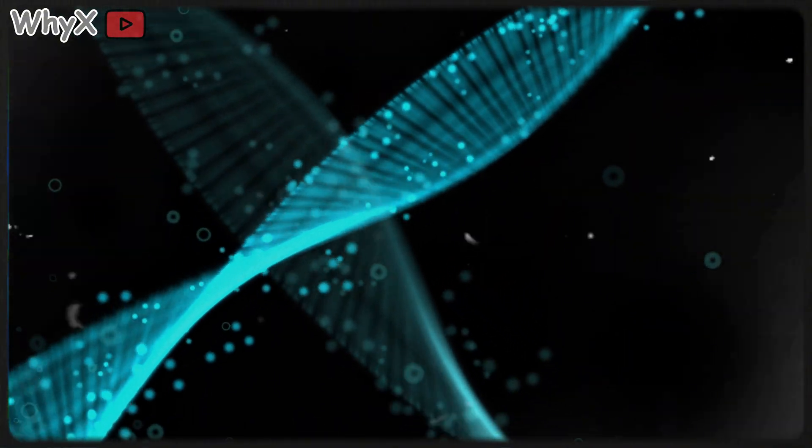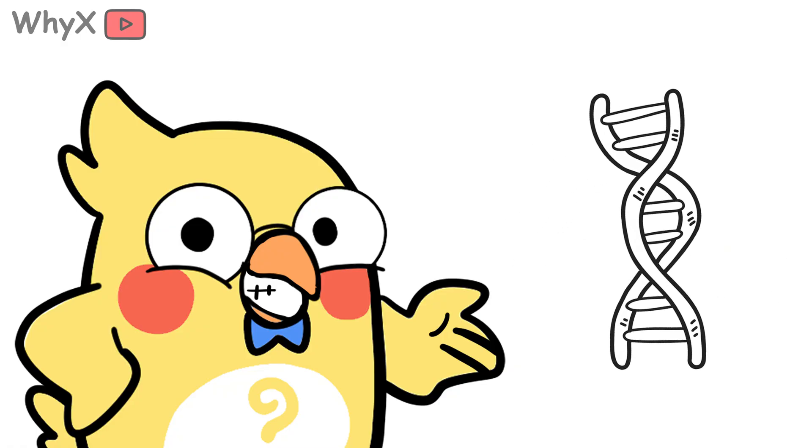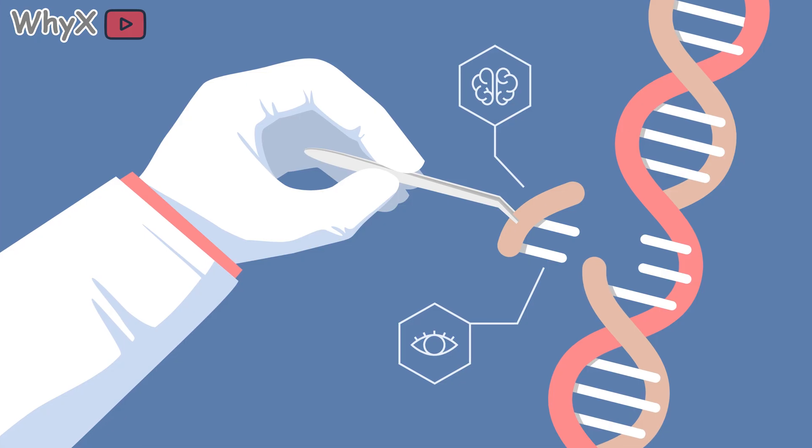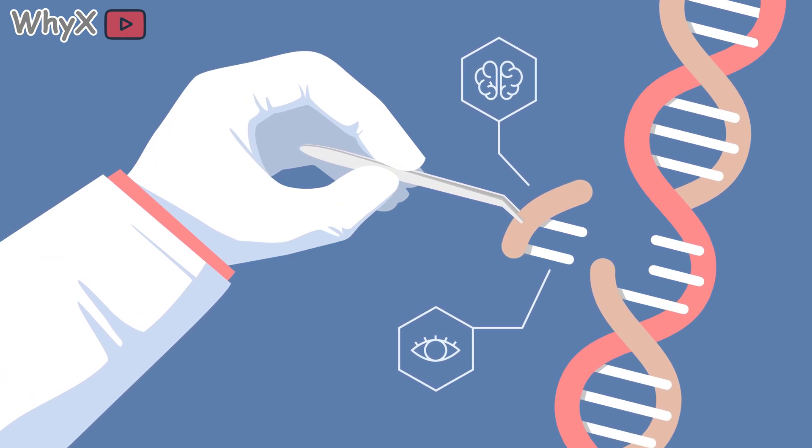And this is where things get even more fascinating. If DNA is the code of life, then tinkering with it means rewriting the rules. Which brings us to the next chapter, how science is learning not just to read the genome, but to edit it, and what that means for the future of humanity.